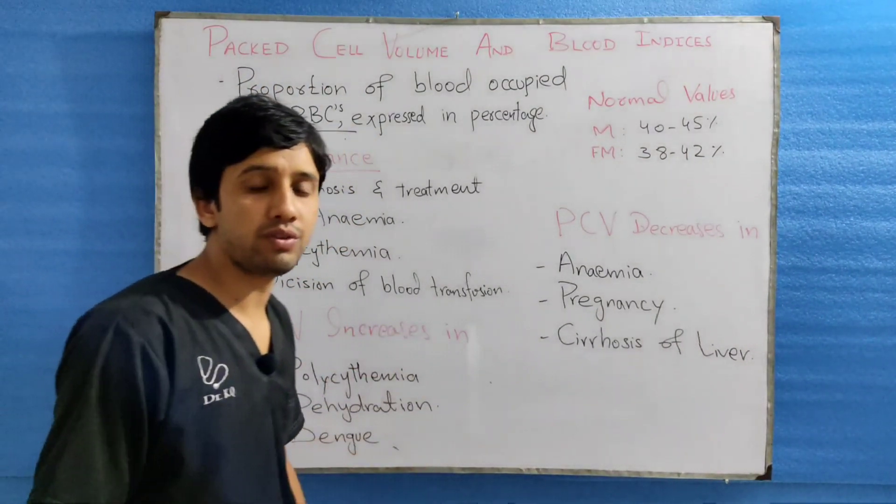The next index is MCH, mean corpuscular hemoglobin. It is the quantity of hemoglobin present in a single RBC, expressed in picograms. Its normal value ranges between 27 to 32 picograms. The next is MCHC, mean corpuscular hemoglobin concentration, with a normal value ranging between 30 to 38%, because it is expressed as a concentration in relation to the volume of RBC, which is why it is given as a percentage.